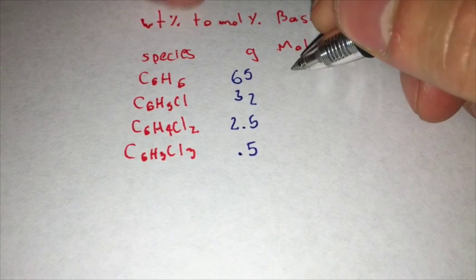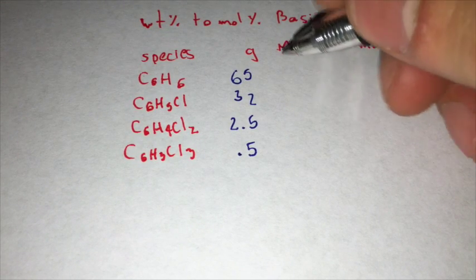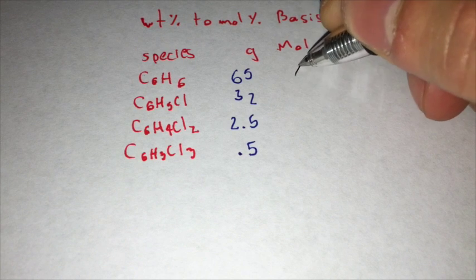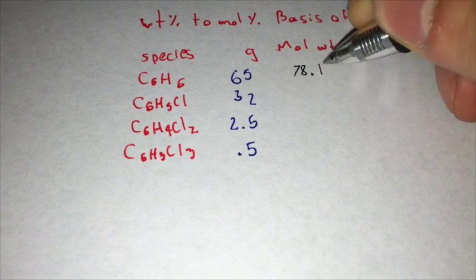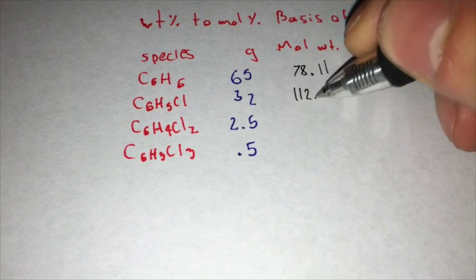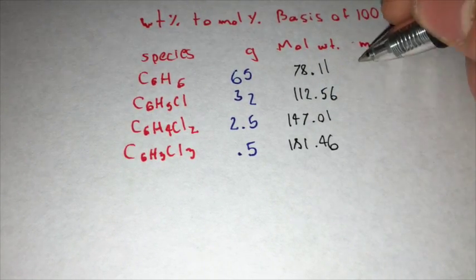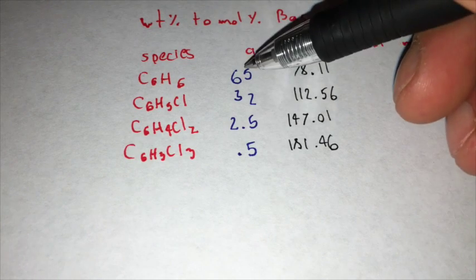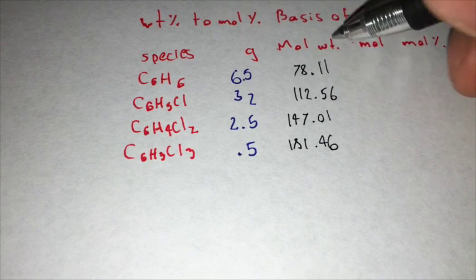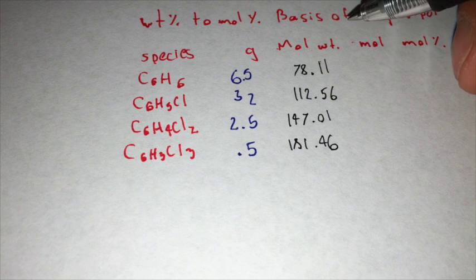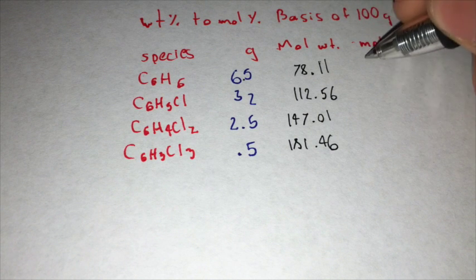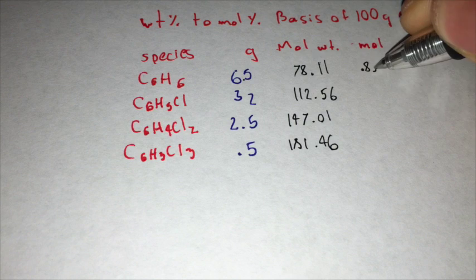Okay, so now the molecular weight of C6H6 from the periodic table is 78.11, and grams over moles would be equal to 0.832.